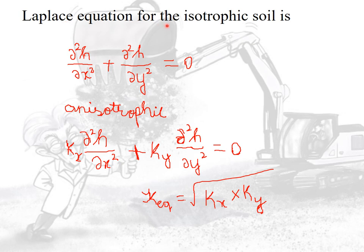The Laplace equation for isotropic soil is: ∂²h/∂x² + ∂²h/∂y² = 0, because for isotropic soil kx equals ky. For anisotropic soil, the equation is: kx·(∂²h/∂x²) + ky·(∂²h/∂y²) = 0. The formula for k-equivalent is the square root of kx multiplied by ky. This is a very important question asked many times in competitive exams.